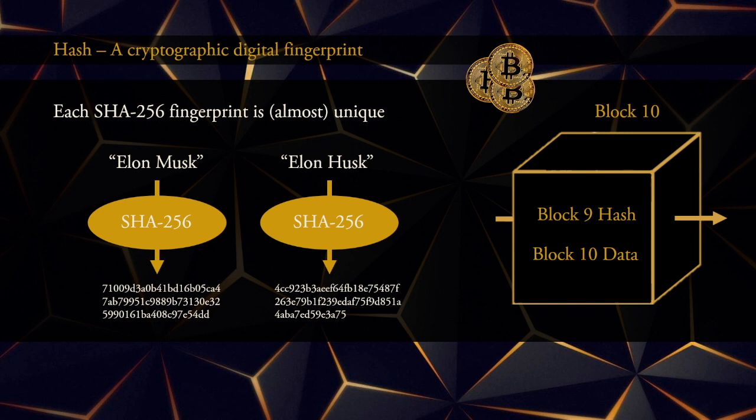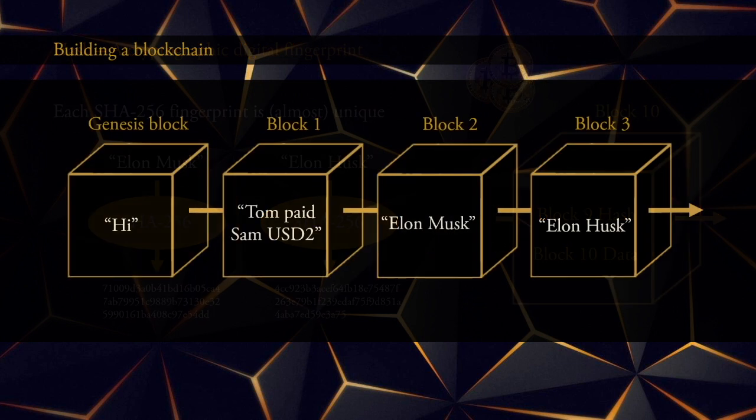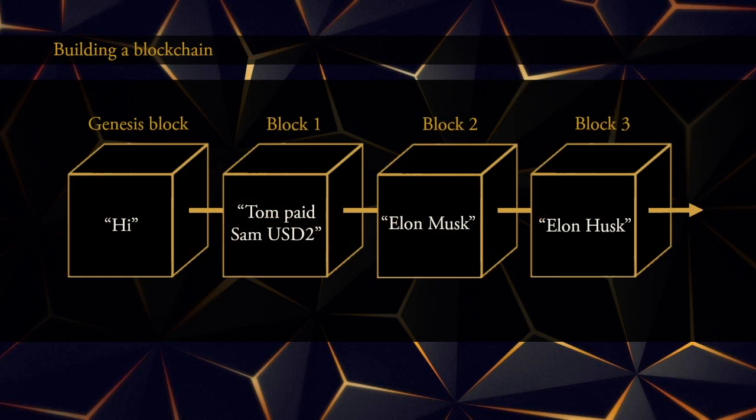If you get into the mathematics behind the hash function, it should be possible to find two different text strings that have the same hash. However, with current computing power it will take more than 10 billion years to find such a pair, and obviously no such pair has been found. So with this small introduction into cryptography, we are now ready to build our own blockchain consisting of four blocks.